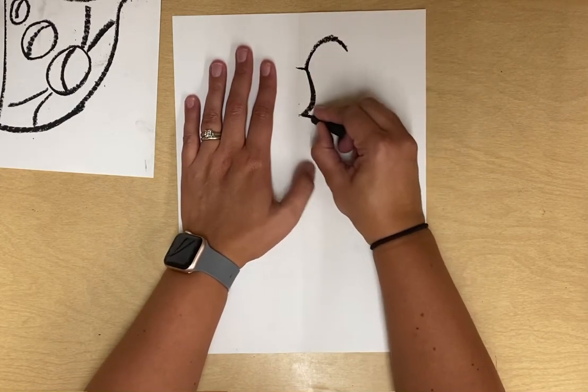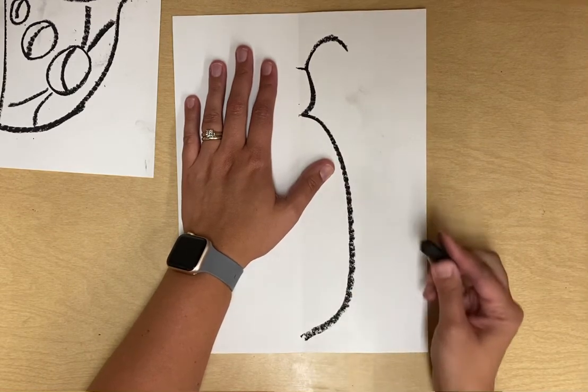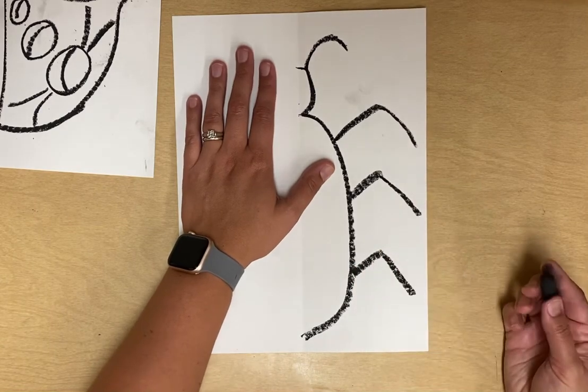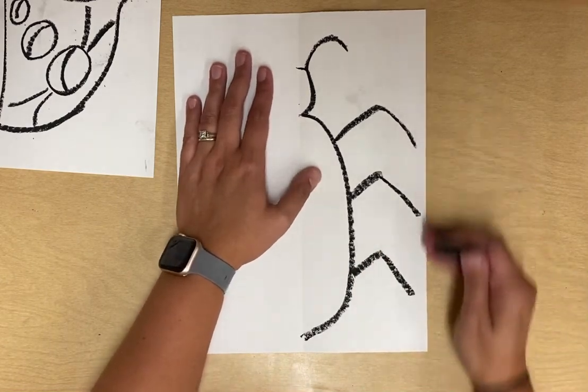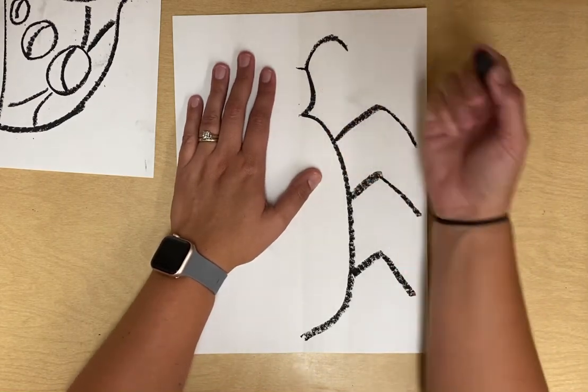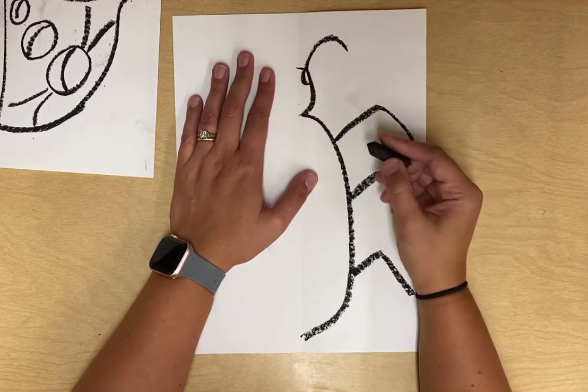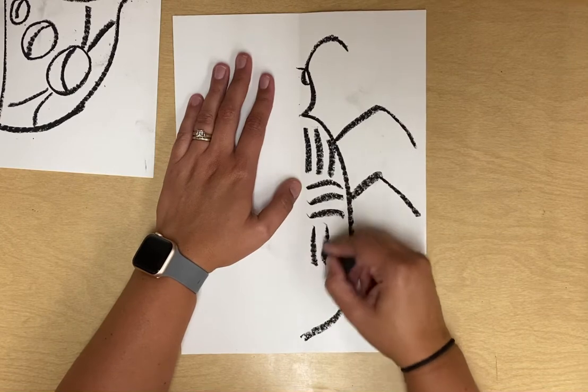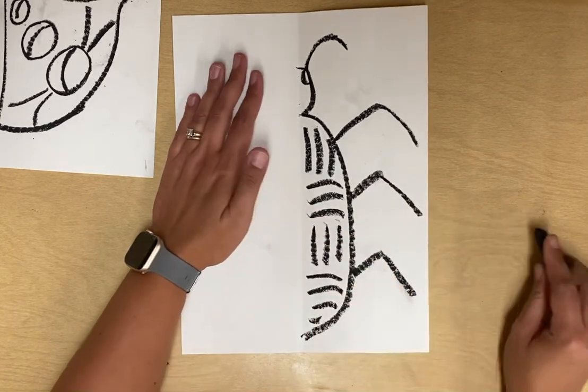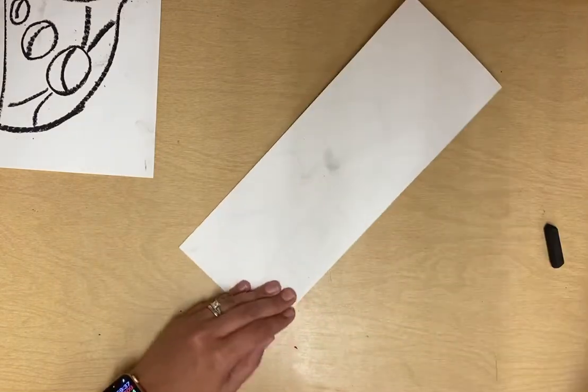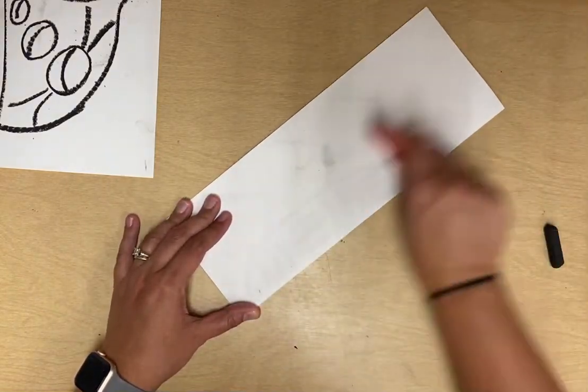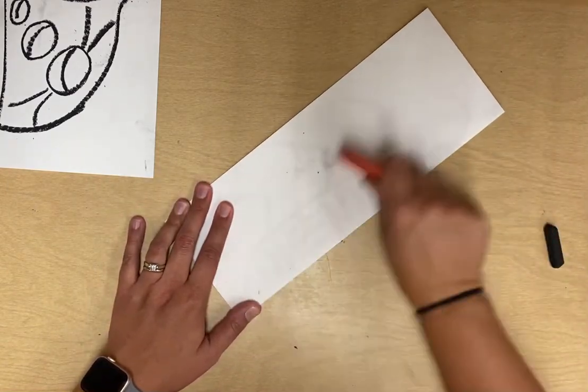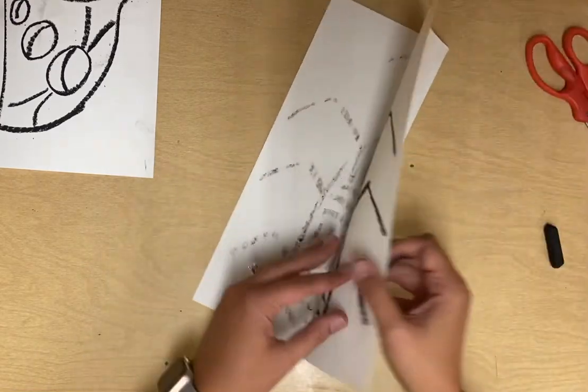I'm going to do a body, and then bugs have six legs. So if I'm just drawing half the bug, I'm only drawing three legs. I could draw like an eye, and then just give your bug some designs, even though bugs may not have these designs, just give it some designs to make it unique.